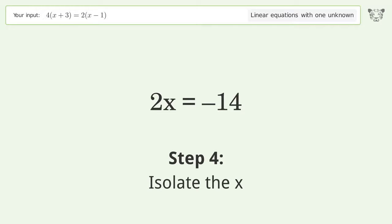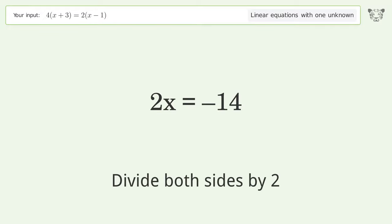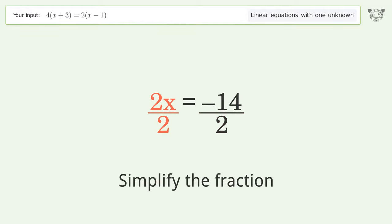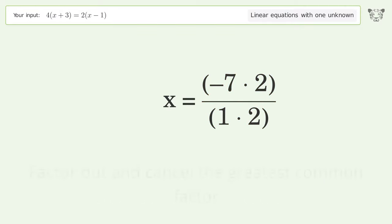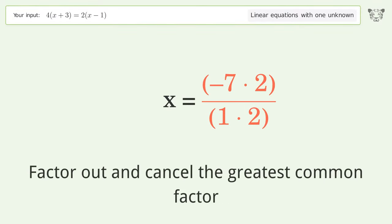Isolate the x. Divide both sides by 2. Simplify the fraction. Find the greatest common factor of the numerator and denominator. Factor out and cancel the greatest common factor.